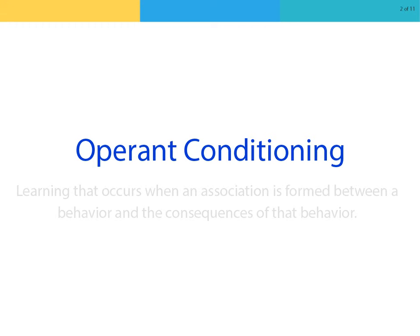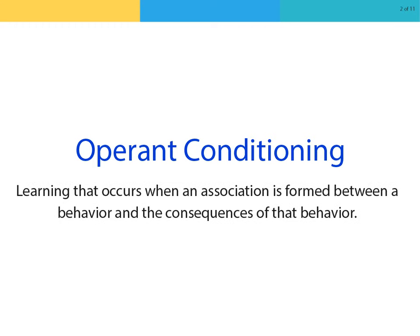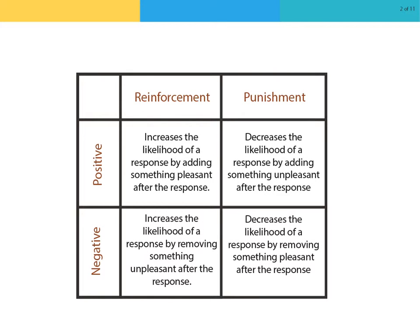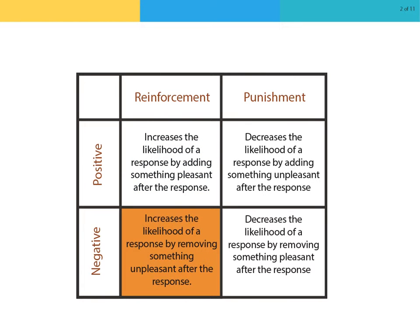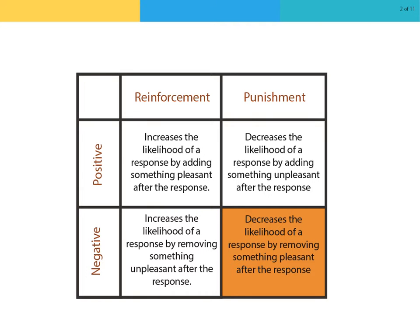Operant conditioning is learning that occurs when an association is formed between a behavior and the consequences of that behavior. Key components in operant conditioning are positive reinforcement, negative reinforcement, positive punishment, and negative punishment.